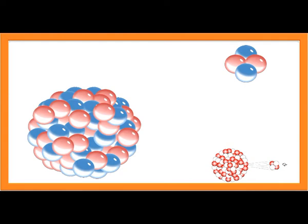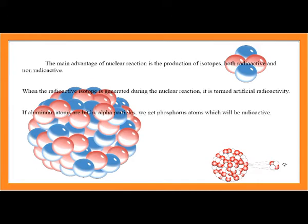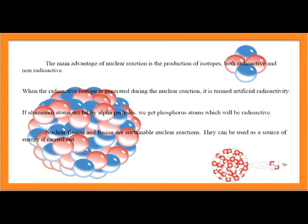The main advantage of nuclear reactions is the production of radioactive and non-radioactive isotopes. When radioactive isotopes are generated during nuclear reactions, it is termed artificial radioactivity. If aluminum atoms are hit by alpha particles, we get radioactive phosphorous atoms. Nuclear fission and fusion are sustainable nuclear reactions that can be used as a source of energy.